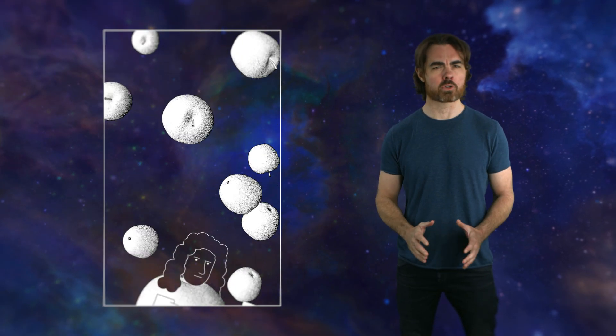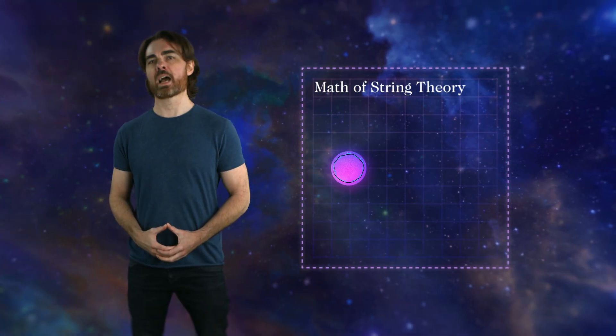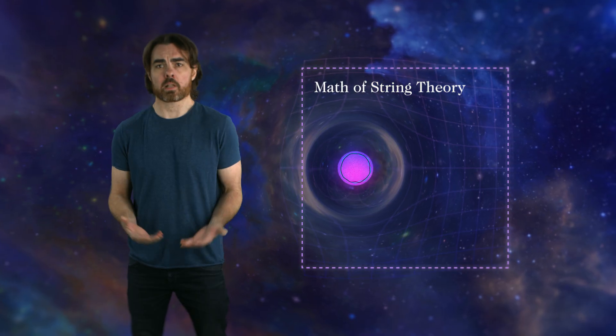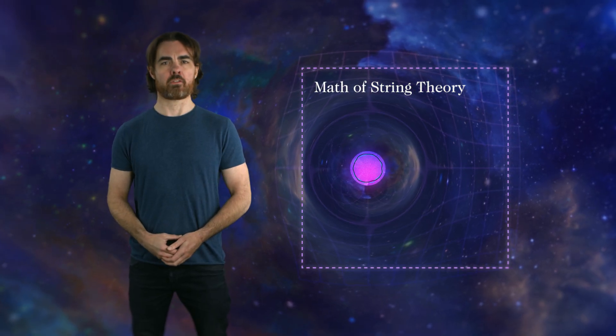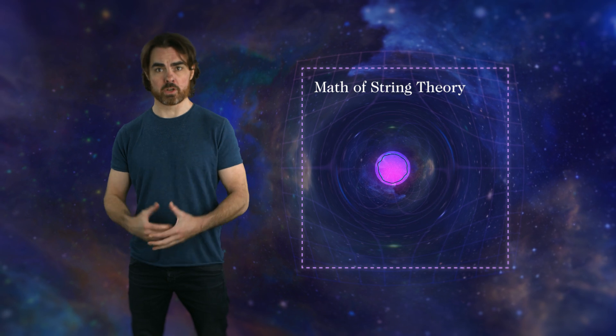It predicts the existence of gravity, which is stupid, of course. Everyone knows that Isaac Newton discovered gravity when he fell out of an apple tree or something like that. There was definitely an apple tree involved. But the fact is, when you start to work out the math of string theory, gravity appears like magic. You don't need to try to fit gravity into string theory. In fact, it will be difficult to remove it.